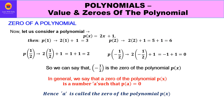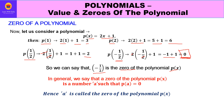Now after the value of a polynomial comes the zero of a polynomial. Let us consider p(x) = 2x + 1. Replacing x by 1 gives 3; replacing by 2 gives 5. If we put x = −½, then 2×(−½) + 1 = −1 + 1 = 0. So we get 0. We can say that −½ is the zero of the polynomial p(x), because when we replaced x by −½ we got the value 0. That is why −½ is the zero of the polynomial p(x).